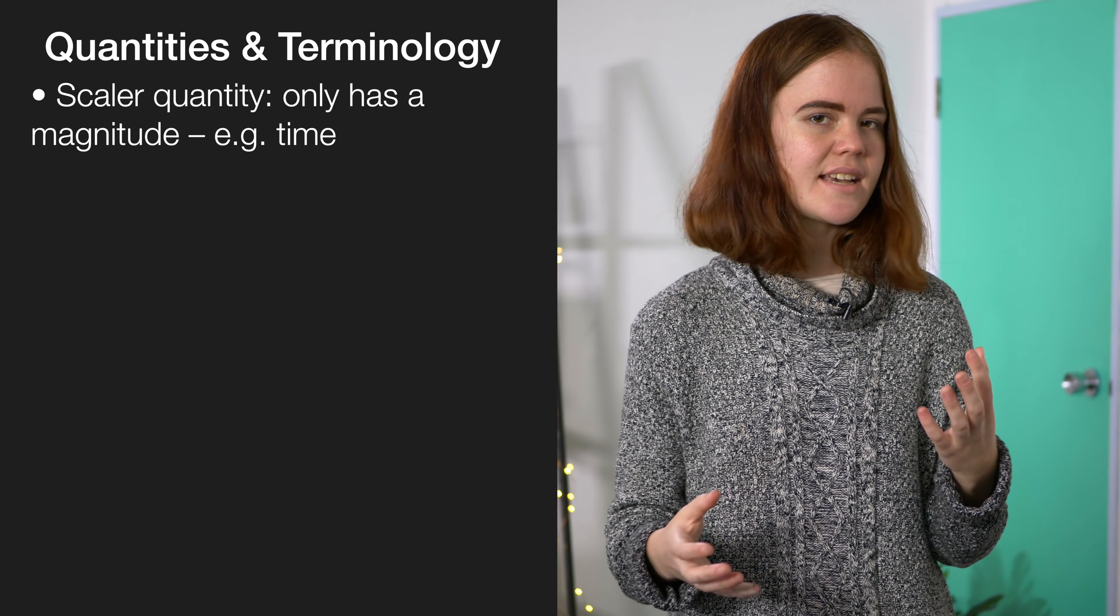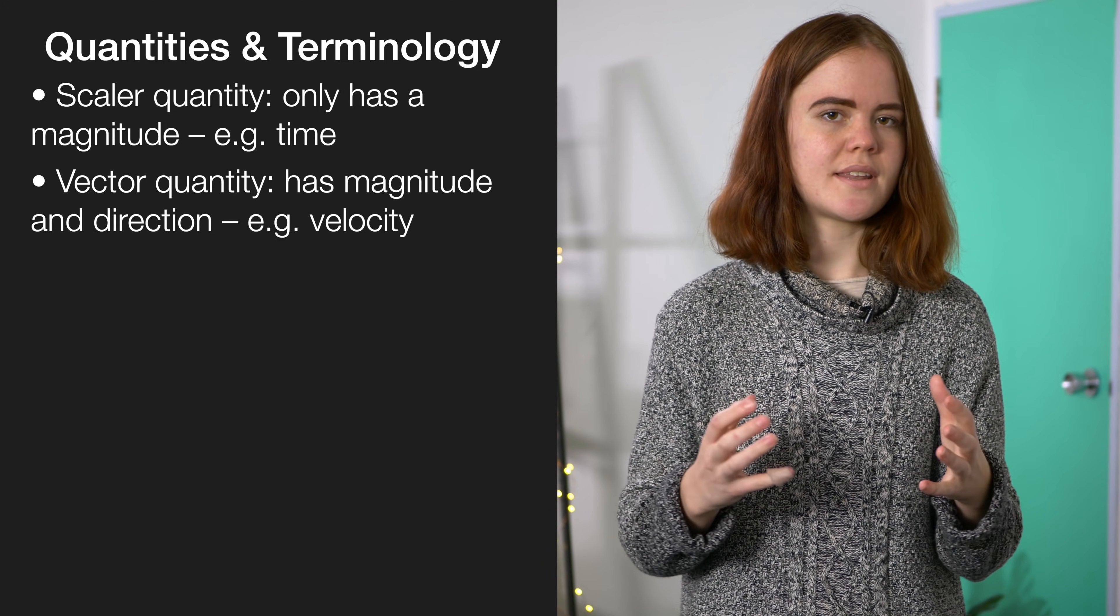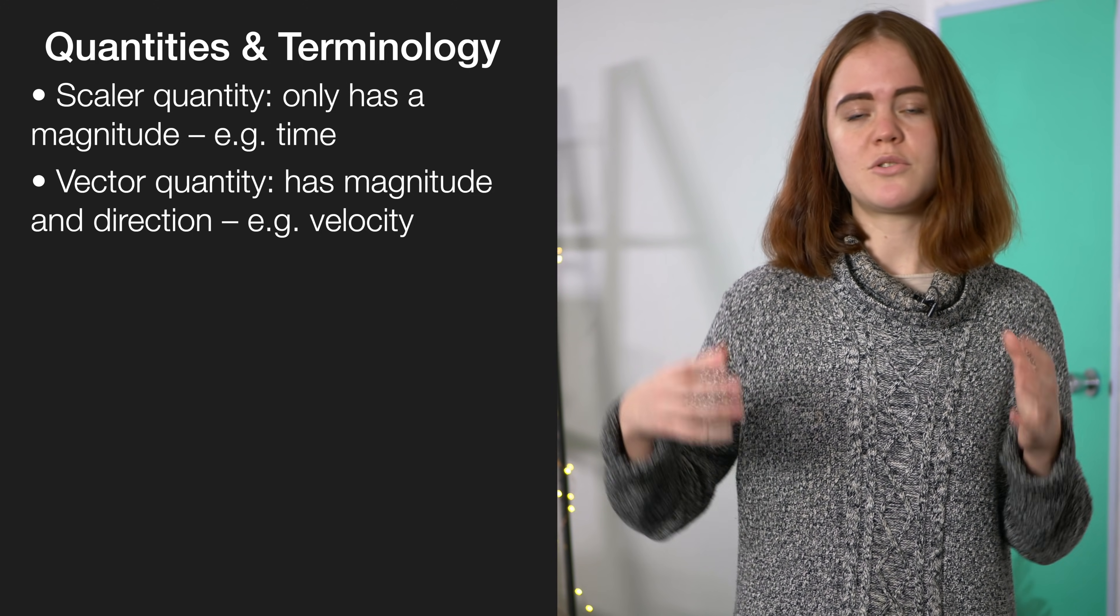This year they also start to introduce the ideas of scalar and vector quantities. A scalar quantity is something like time. It has a size but doesn't have a direction, so for example 10 seconds. Whereas a vector quantity is one that has a size and a direction. Something like velocity, 45 meters per second to the north.